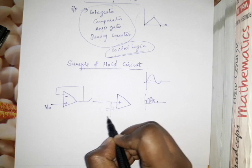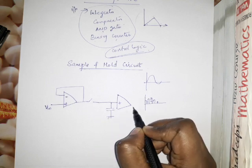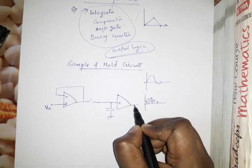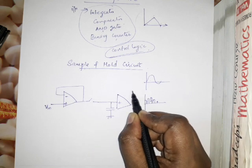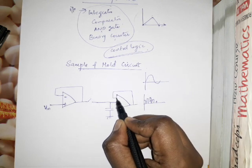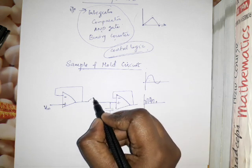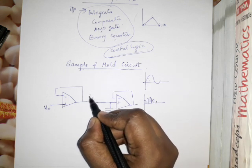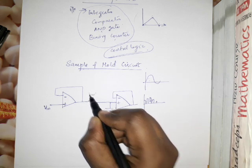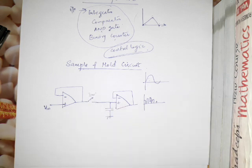There is a capacitor in the circuit. There is a voltage follower connected, and there is a switch. The voltage from the input signal is connected to the output through this arrangement.